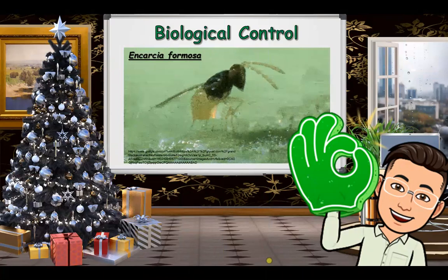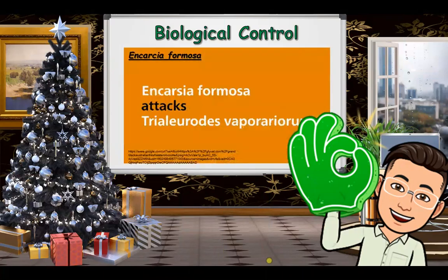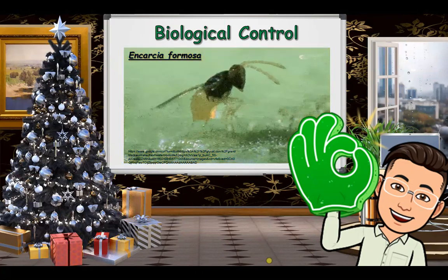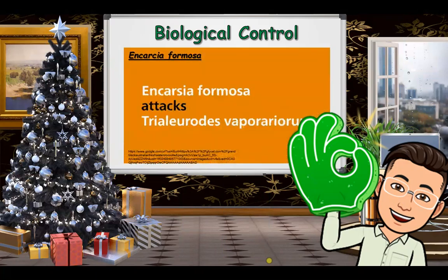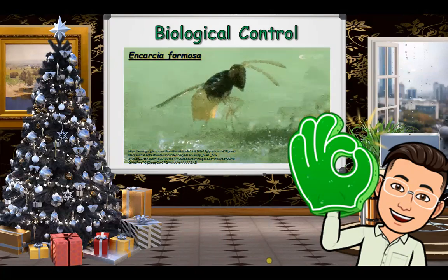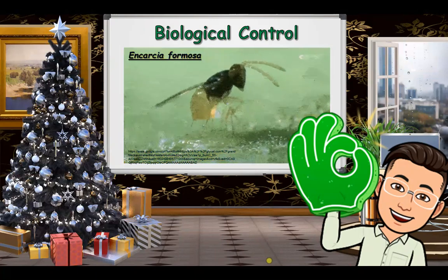The biological control for whitefly is Encarsia formosa. This tiny parasitic wasp lays its egg in the larvae of the whitefly. Parasitized larvae turn black and are easily recognized. Adult Encarsia formosa also feed on honeydew and the body fluids of whitefly larvae.